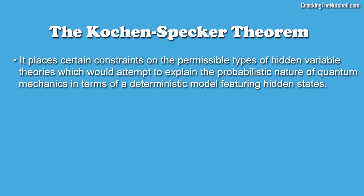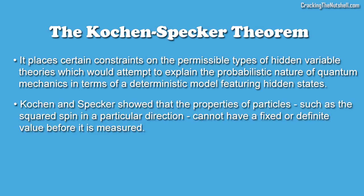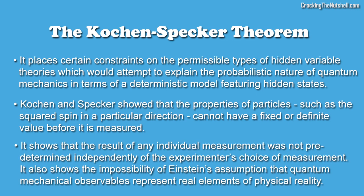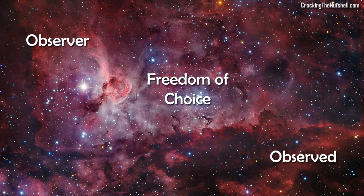This argument follows from another important theorem, the Kochen-Specker theorem, a complement to Bell's theorem, which places certain constraints on the permissible types of hidden variable theories, which would attempt to explain the probabilistic nature of quantum mechanics in terms of a deterministic model featuring hidden states. Kochen and Specker showed that the properties of particles, such as the squared spin in a particular direction, cannot have a fixed or definite value before it is measured. The Kochen-Specker theorem not only shows that the result of any individual measurement was not predetermined independently of the experimenter's choice of measurement, but it also shows the impossibility of Einstein's assumption that quantum-mechanical observables represent real elements of physical reality, and hence, in line with non-realism, it highlights the ever-important interplay between freedom of choice, observer and observed.